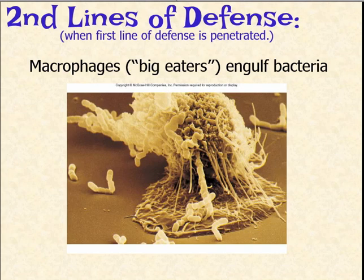The second line of defense is a little more complicated. We're going to talk about three cells that work to attack all pathogens and then the inflammatory response. This is what happens when the first line of defense is penetrated — when the skin has been broken or when bacteria has made it through the mucous membranes.